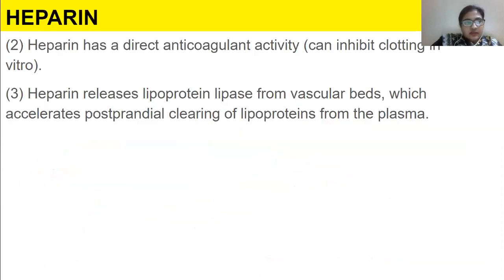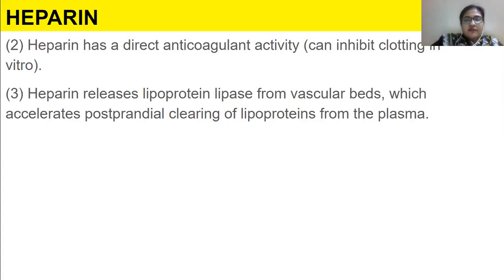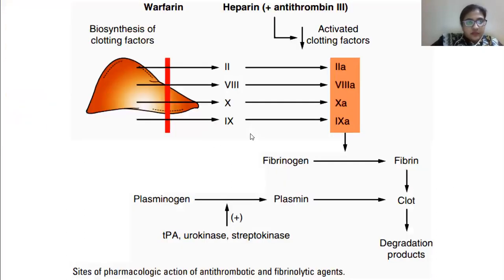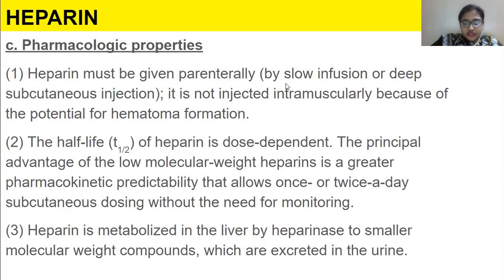Heparin has a direct anticoagulant activity — it can inhibit clotting in vitro, which means outside the body. Heparin also releases lipoprotein lipase from vascular beds, which accelerates postprandial — meaning after-meal — clearing of lipoproteins from the plasma. Heparin combined with antithrombin 3 carries out this function.